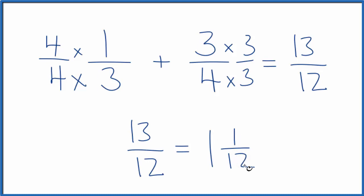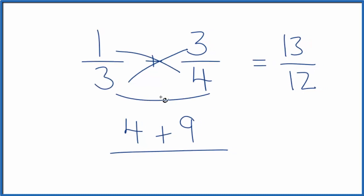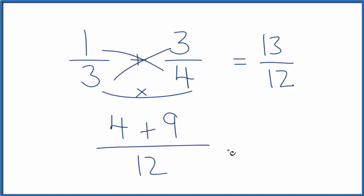Let's check our work, though. I could multiply 1 times 4, that's 4, plus 3 times 3, that's 9, and then we bring the bottom across, 3 times 4, that gives us 12. So we get 4 plus 9 is 13 over 12, and again, we get the same answer.